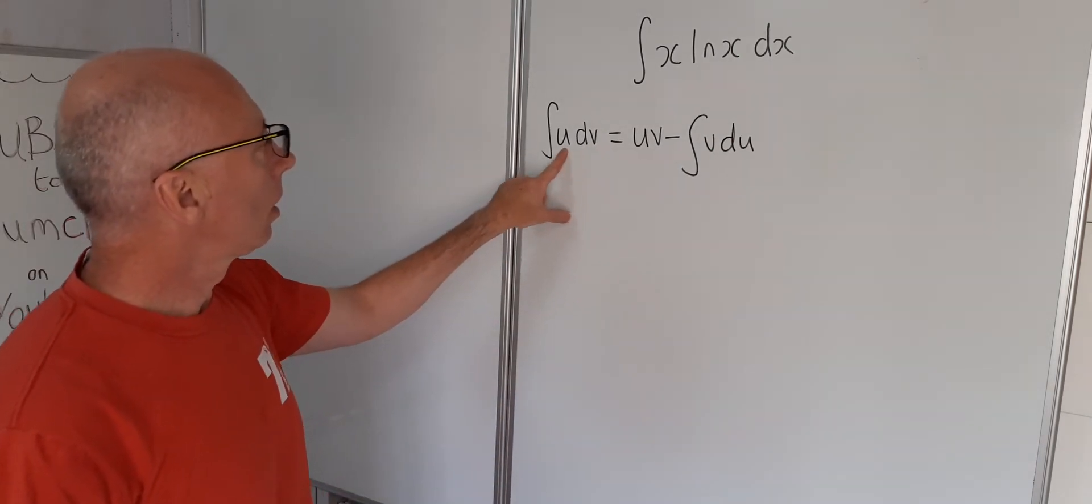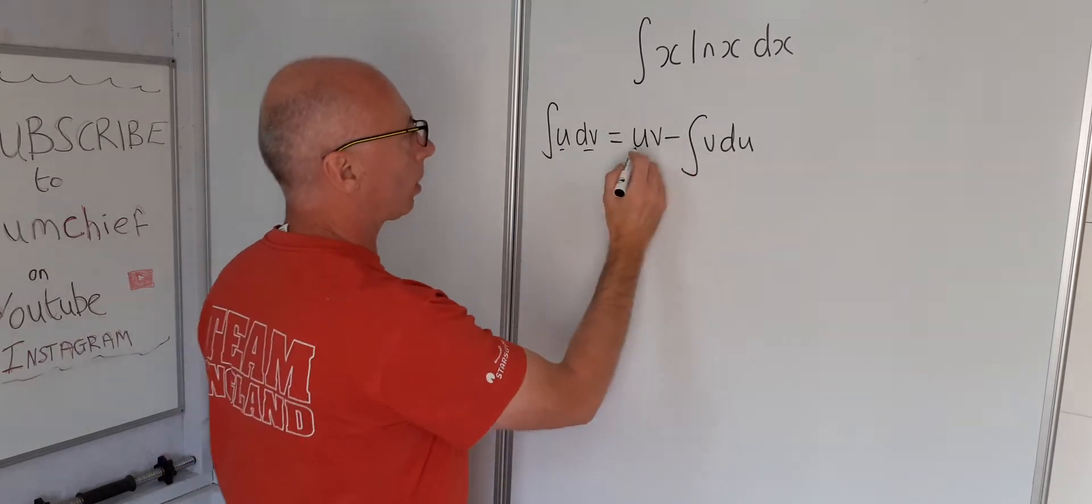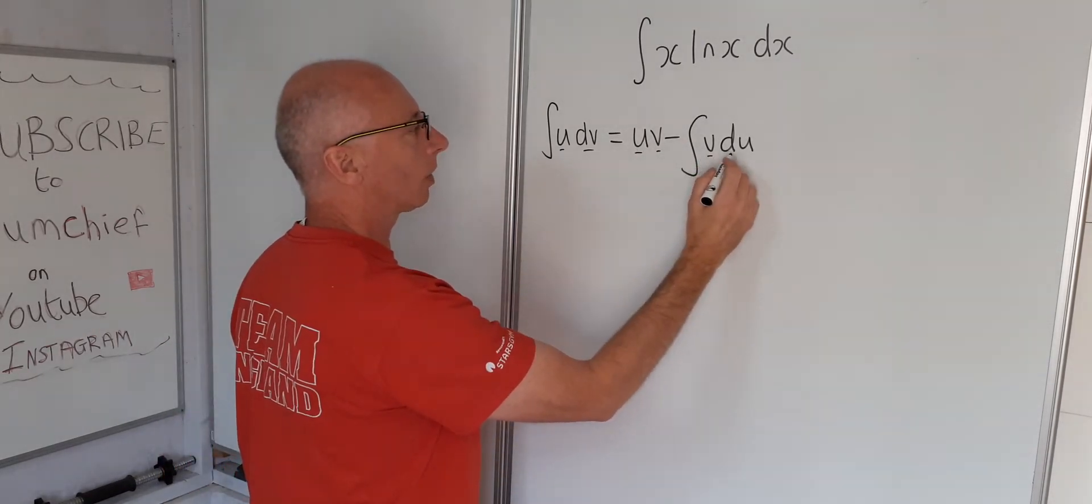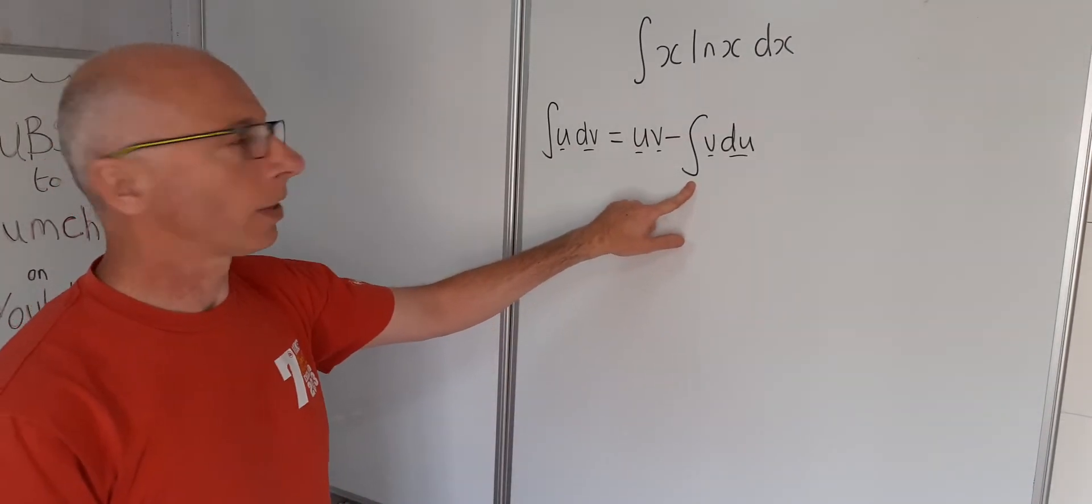So we need to assign u and dv, and then what we do is we find du and v, and then we've got another integral to find the solution to.